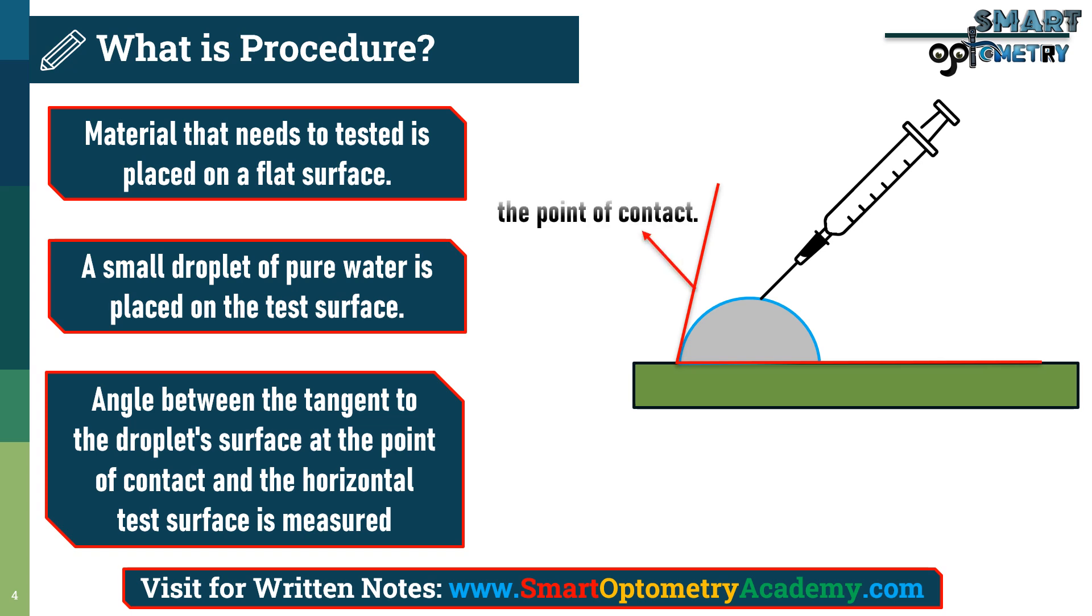Here, this is the tangent to the droplet's surface at the point of contact and this is the horizontal test surface. The angle between this is known as the contact angle which is denoted as theta.